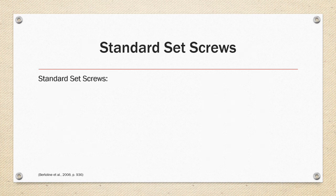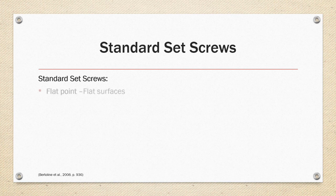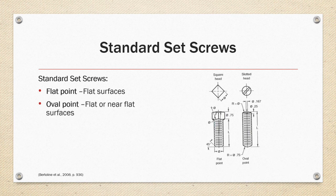Standard set screws. Set screws are designed differently to apply pressure on a surface. So there is a flat point and an oval point. They come with a variety of heads but the flat point and the oval point are designed to apply pressure to a flat surface or near flat surface without deformation to that surface. In the example on the right, one of the set screws has a square head, the other one has a slotted head.